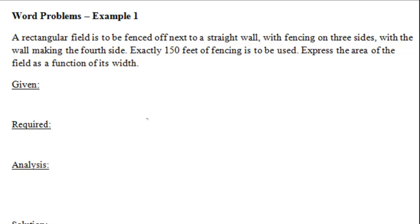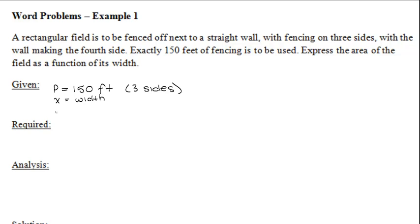The first step is Given, so we write down what we're given. It says exactly 150 feet of fencing is to be used. Since only three sides use fencing, the perimeter equals 150 feet — but remember, that's only three sides because the wall is the fourth side. We also write down our variables: x as width and y as length.